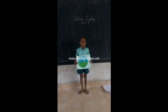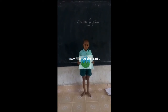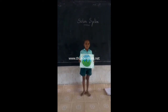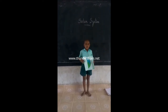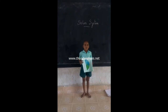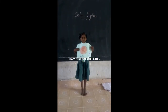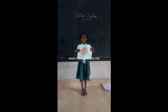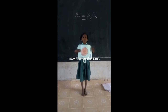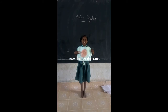The third planet is Earth. It is where we live. There is air and water, and wildlife. Mars is the fourth planet. It is red in color.